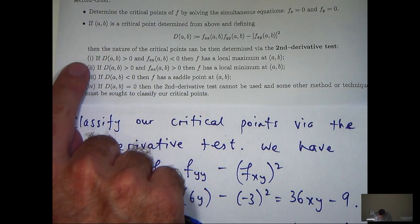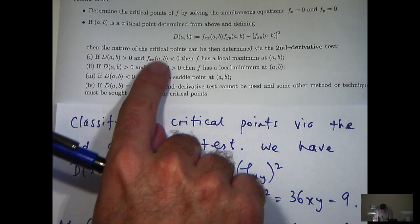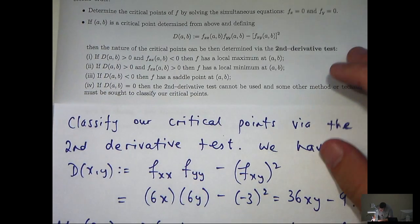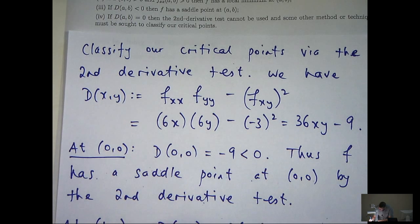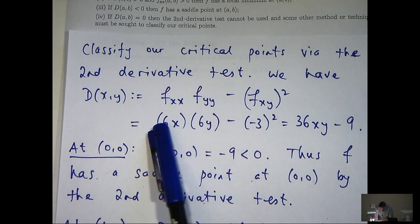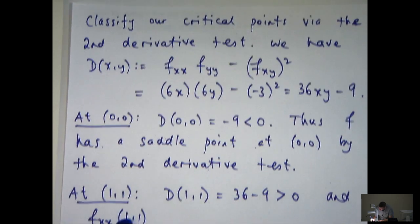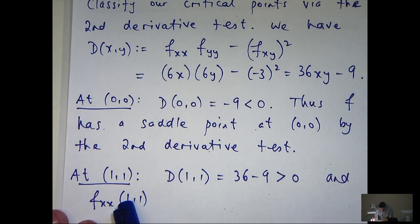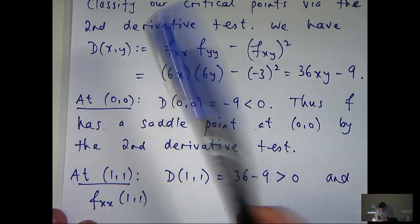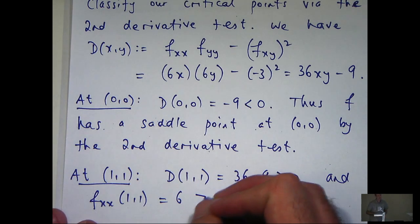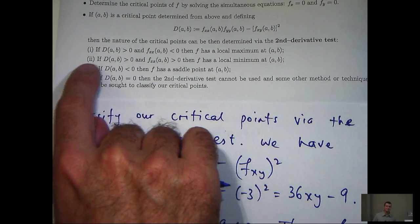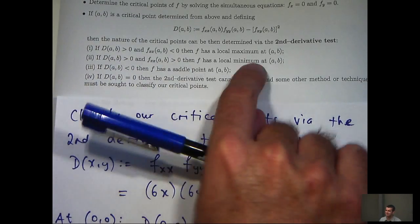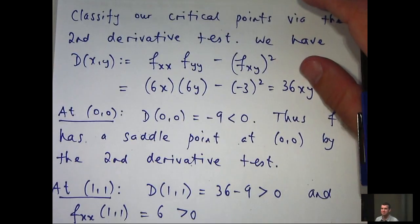Let's go to our second derivative test. It's going to be either case 1 or case 2. We have to look at this second derivative with respect to x. f sub xx is 6x, so when x equals 1, we'll get just 6, and that's positive. So if we go back to our second derivative test, it's the second case. f will have a local minimum at (1, 1).